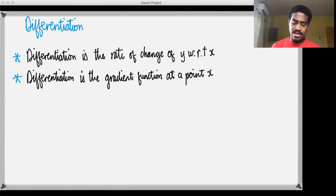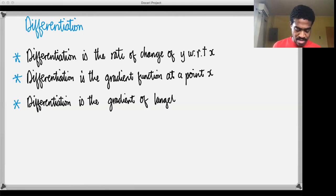And lastly, differentiation gives you the gradient of a tangent to a curve y at a point x. So differentiation is the gradient of the tangent to a curve y at any point x. So that's very key. So that is basically some things to note about differentiation, what it is.